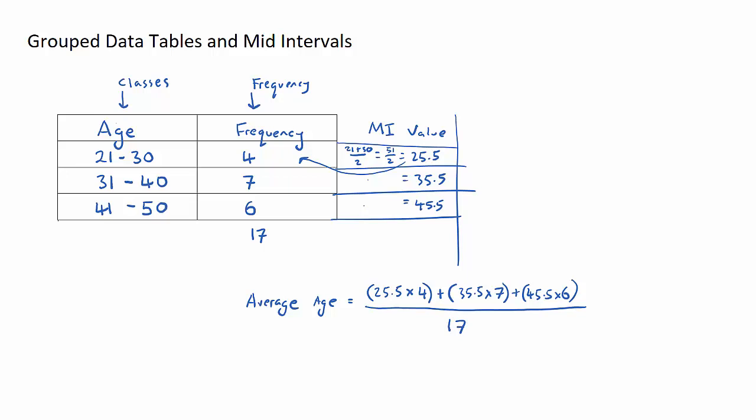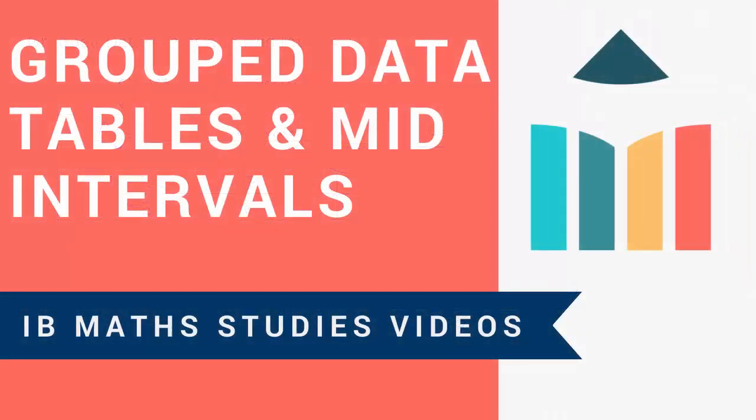That gives a brief overview of how a grouped data table is set up, what the mid interval value means, and then what we use the mid interval value for, which is to find the average of whatever we're talking about. In this case here we're looking at ages, it could be temperatures, heights, or a whole range of different things. I hope you enjoyed that. I recommend going across to the question bank section and practicing some of these questions.